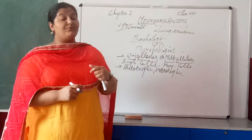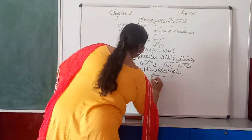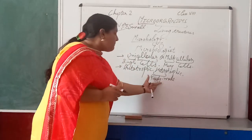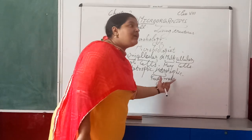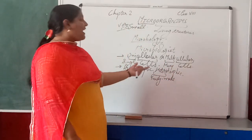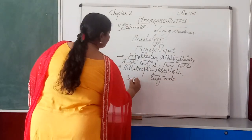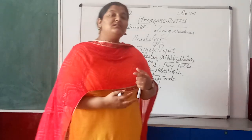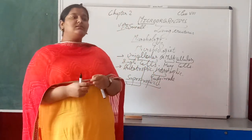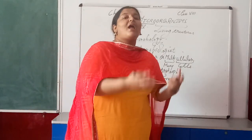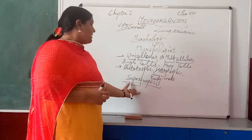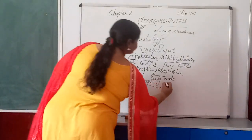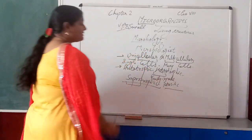When talking about the heterotrophic mode of nutrition, 'hetero' means they obtain ready-made food or depend upon autotrophs for nutrition. That is known as the heterotrophic mode. The next mode of nutrition is saprotrophic — these organisms feed on dead and decaying material like dead plants and animals that decompose into the soil.